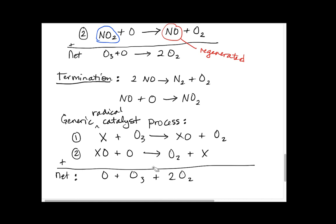This generic radical catalyst process is one that we see happening over and over to destroy ozone, but it's also one that can be terminated and that we understand pretty well. We're going to pause right now. In my next video, because I'm trying not to make my videos too long, we're going to talk about ozone destruction by other means and some of the implications of it. Thank you.